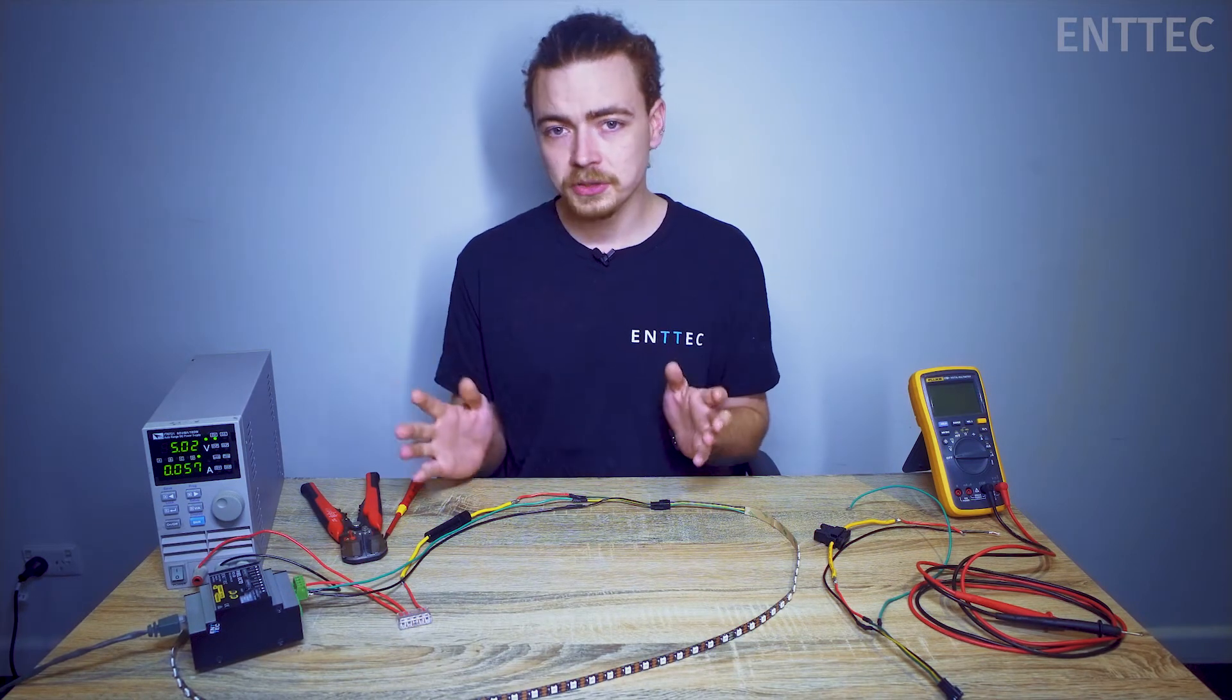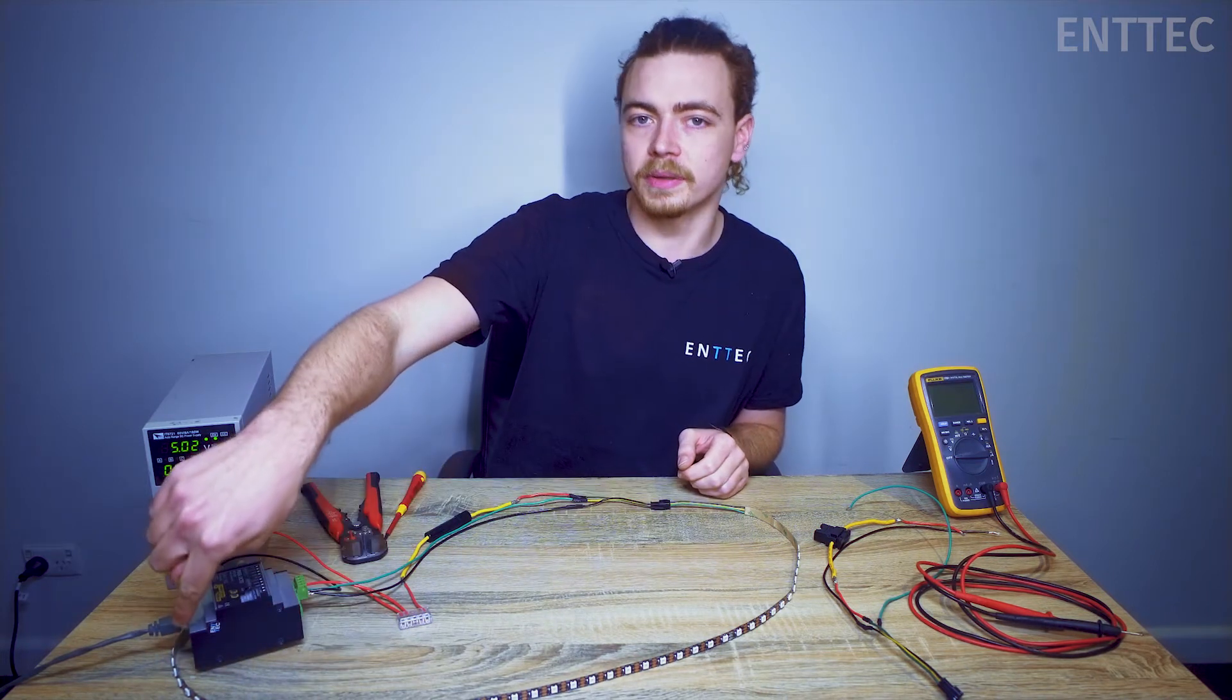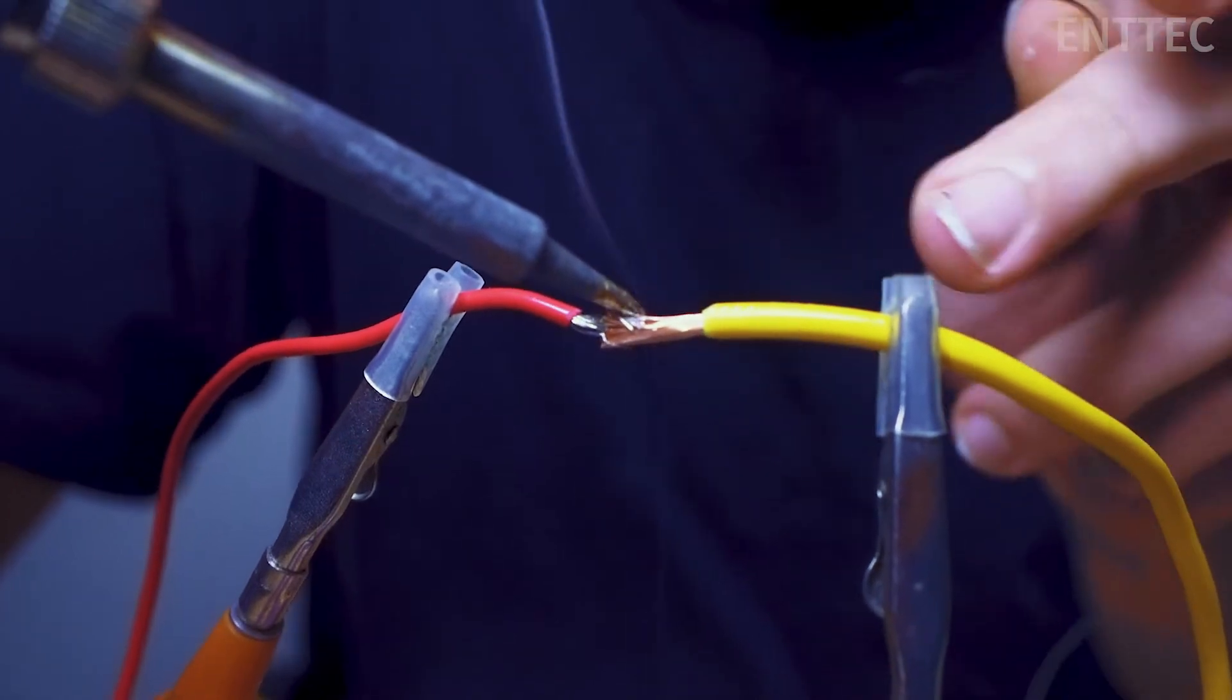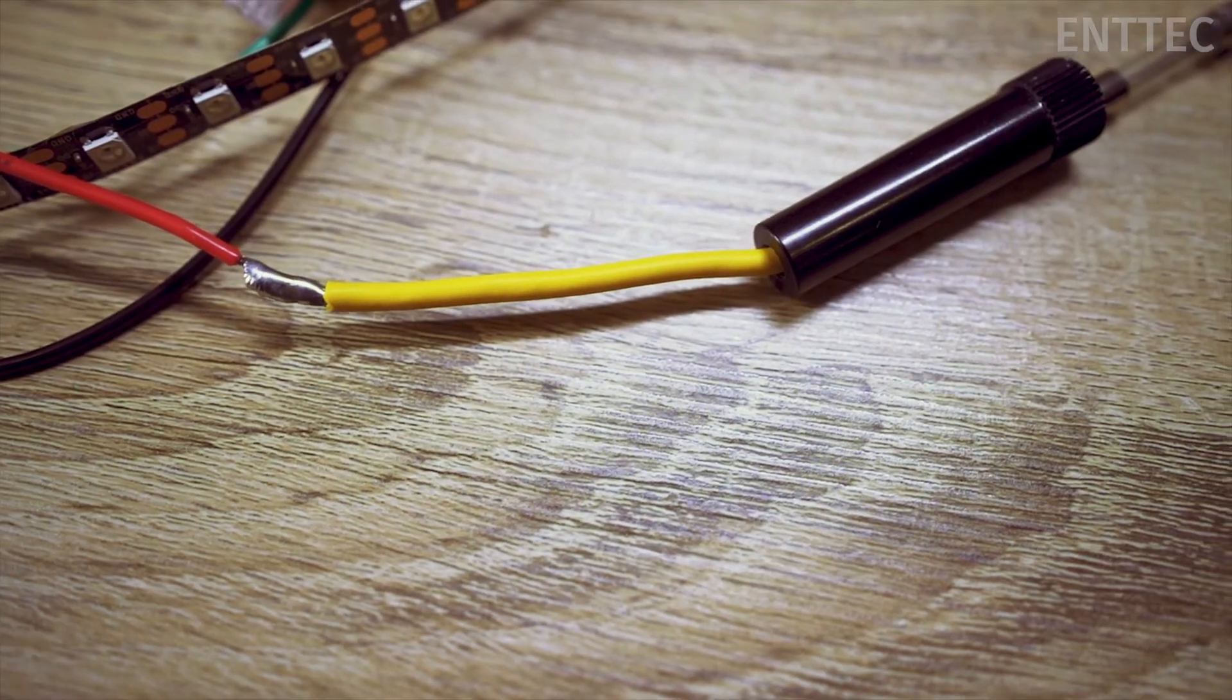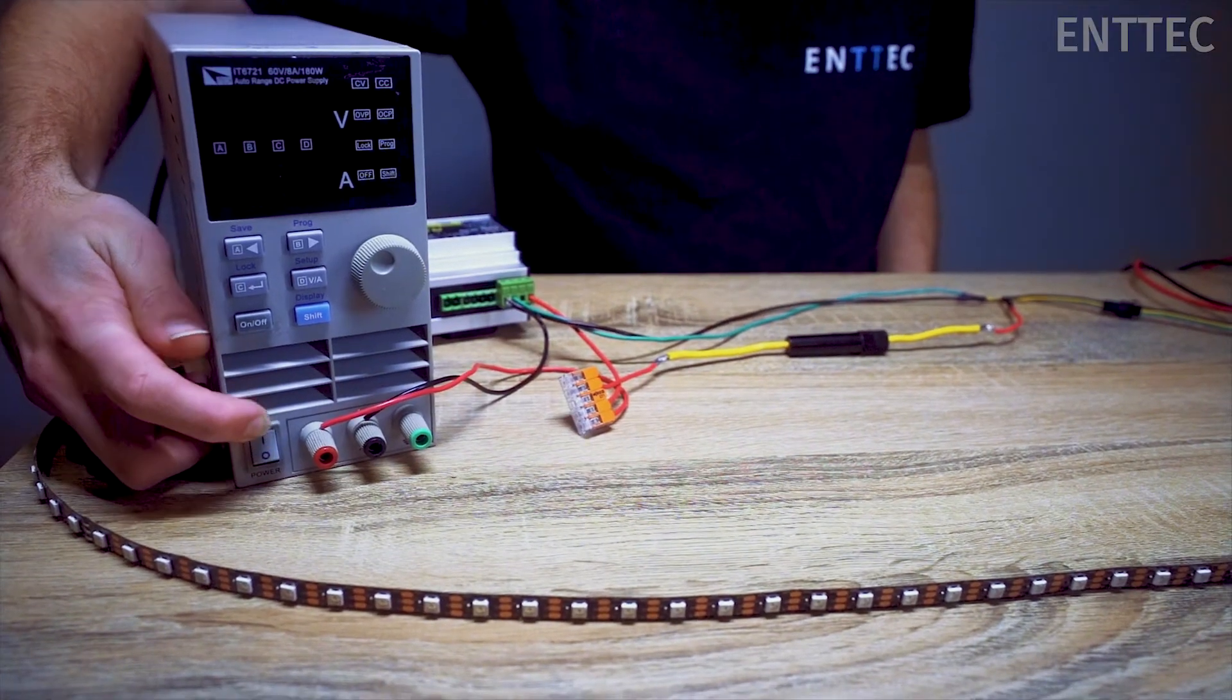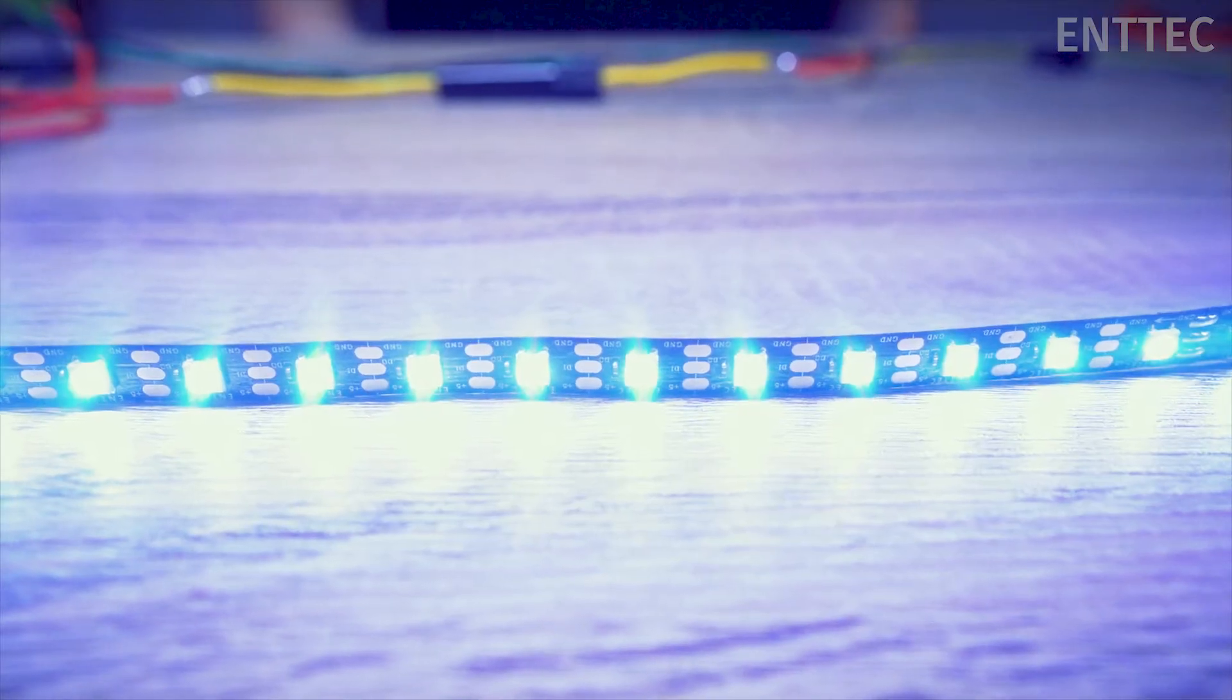So let's put together our own mock installation using a pixel octo and one meter of 5 volt pixel tape. To start off we'll solder in our fuse holder but this time we'll leave our soldered connections exposed so we can probe across both of these points to measure the voltage drop. Once everything's connected we can apply power and boot up the system.